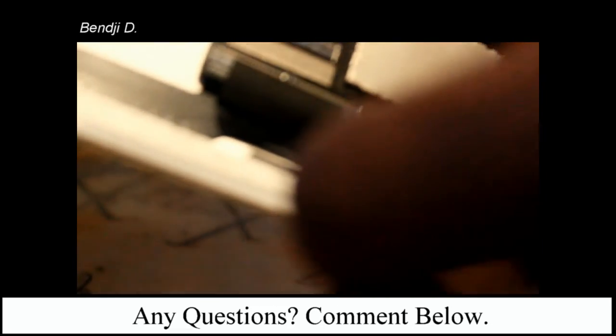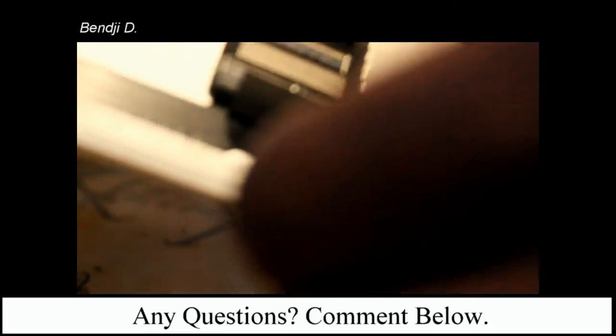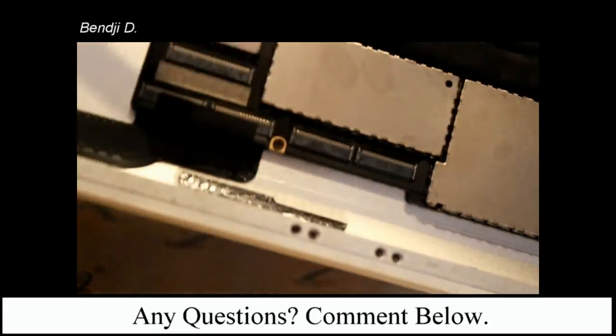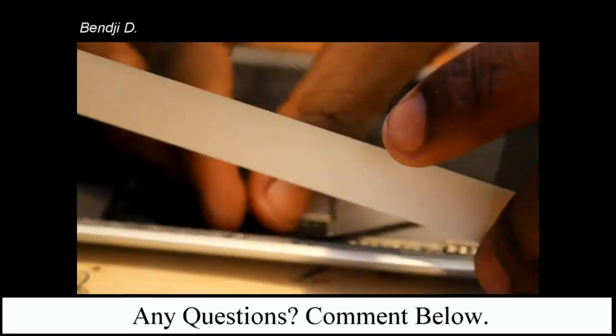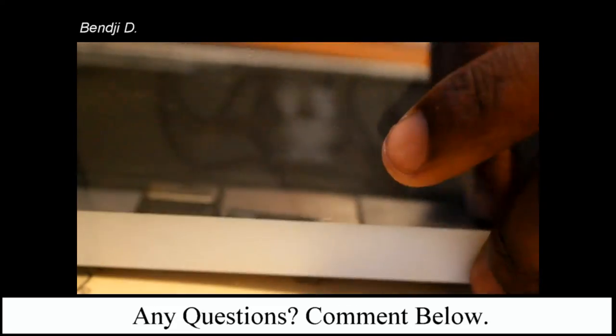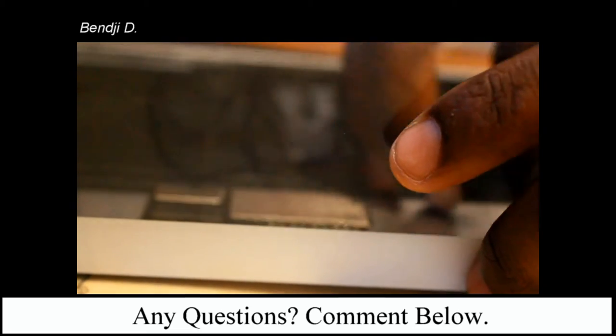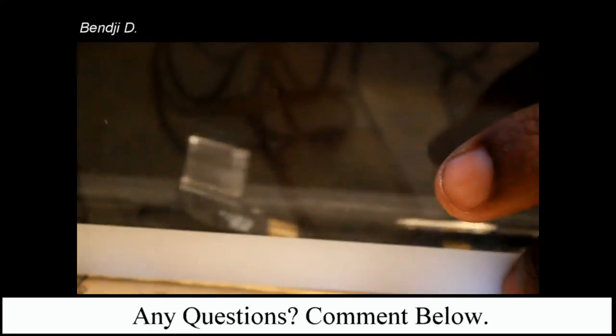Step 5: Locate the flex cable connected to the digitizer. Find where it's connected on the motherboard and gently disconnect it. Take the replacement screen you bought—you can find these for about 15 or 30 bucks on sites like eBay or Amazon. Connect the replacement screen/digitizer back into the motherboard and place the LCD back into place.